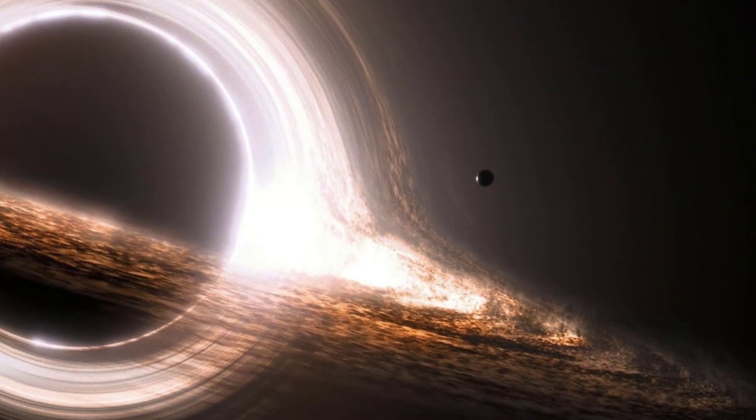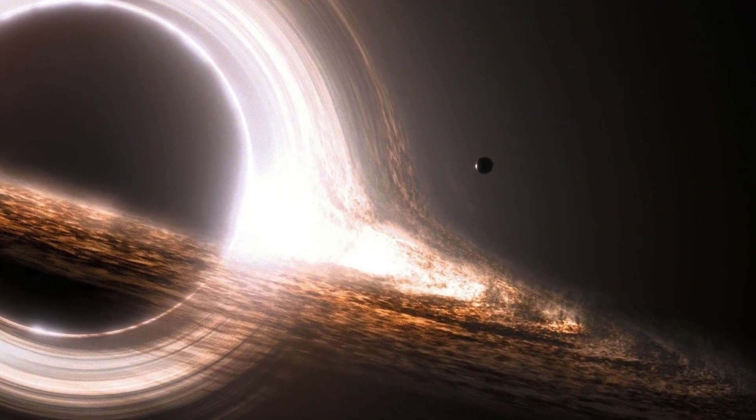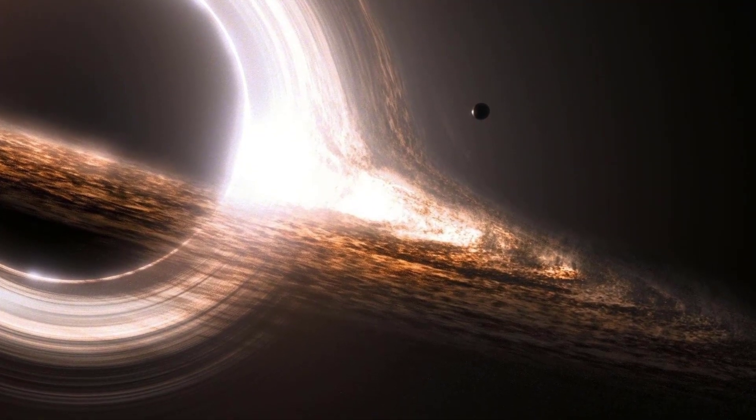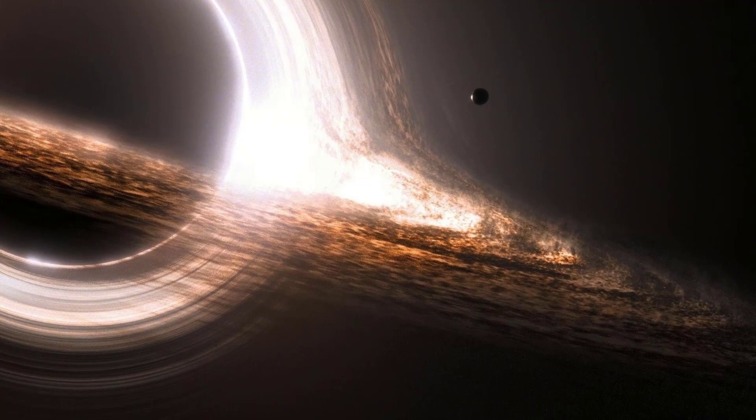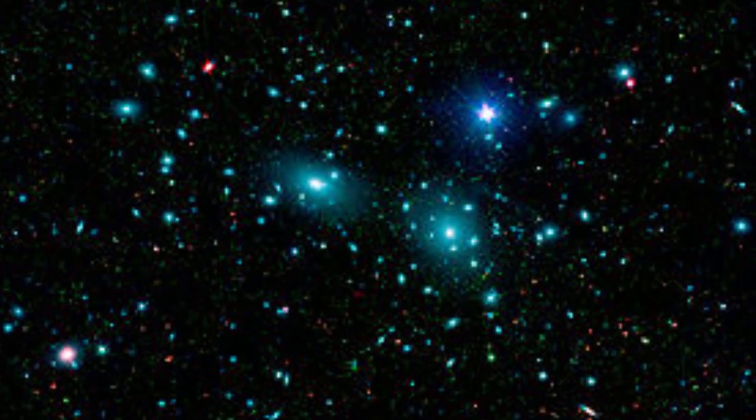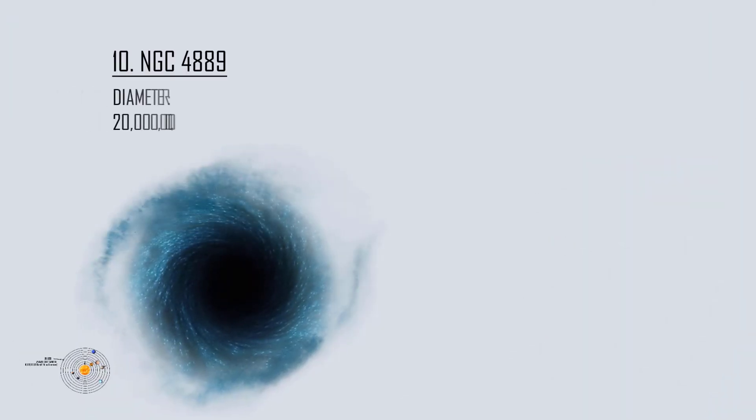Number 10: NGC 4889. As the largest and the most massive galaxy easily visible to earth, it has played an important role in astronomy. In 2011, astronomers did a study and discovered that there is a supermassive black hole in the center with an estimated mass of 21 billion solar masses. The diameter of the black hole's event horizon is about 20 to 124 billion kilometers or 2 to 12 times the orbit of Pluto around the sun.